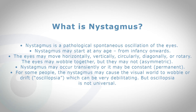Nystagmus is a spontaneous oscillation of the eyes, and I'm sure you are very well aware of that. It can start at any age from birth onwards, and the eyes can move in pretty much any direction — horizontally, vertically, around and around. They can also wobble together, but sometimes one eye may be more affected than the other.